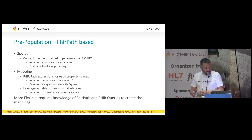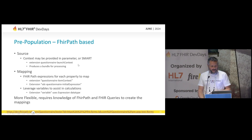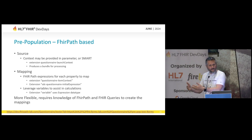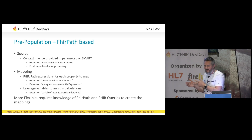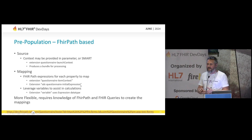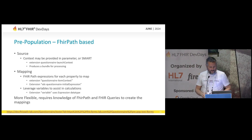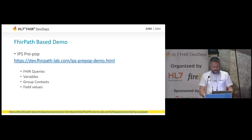FHIRPath-based population starts with the same context. This comes from extensions with launch context, which lets you say: I need the patient, I need the practitioner, or I need an IPA document — these are your requirements. Then it gets populated with initial expressions that tag which question needs to read from which data source. You need knowledge of FHIRPath and FHIR queries, and you can leverage variables within that space.